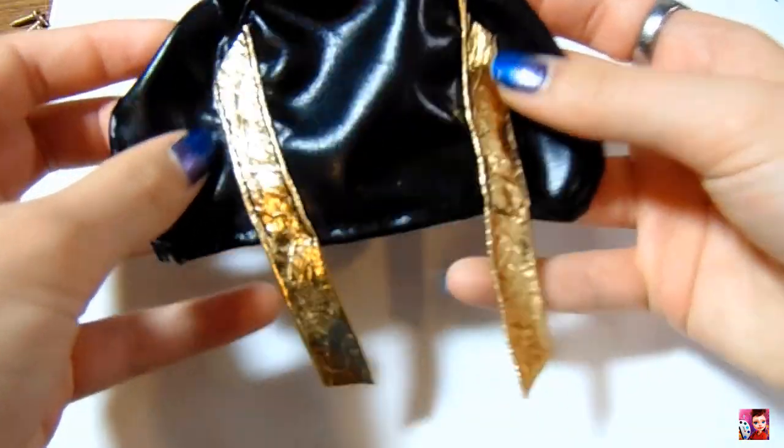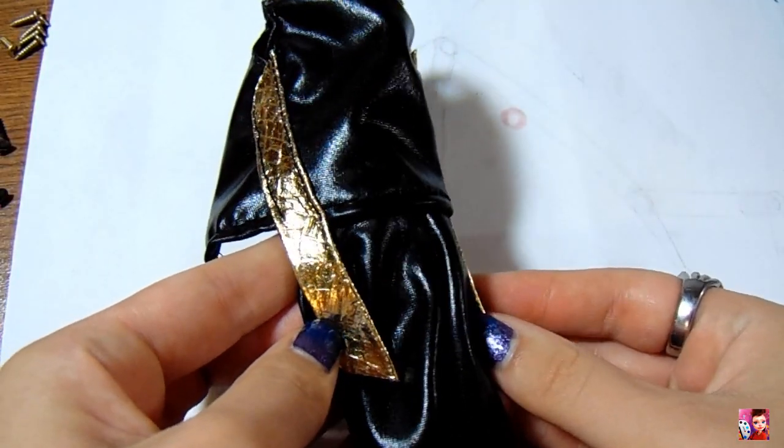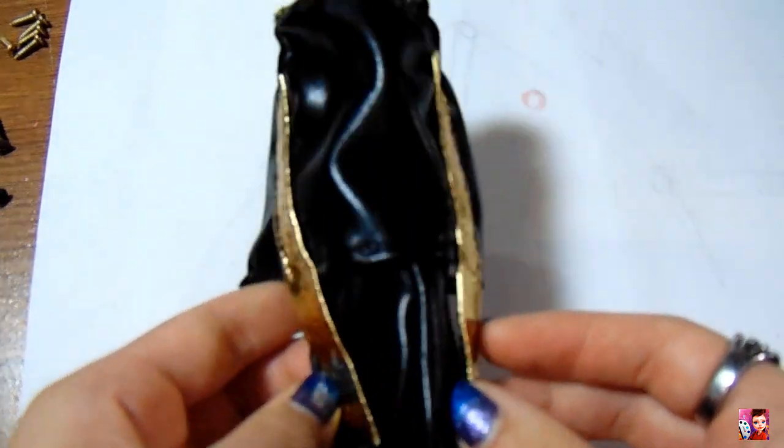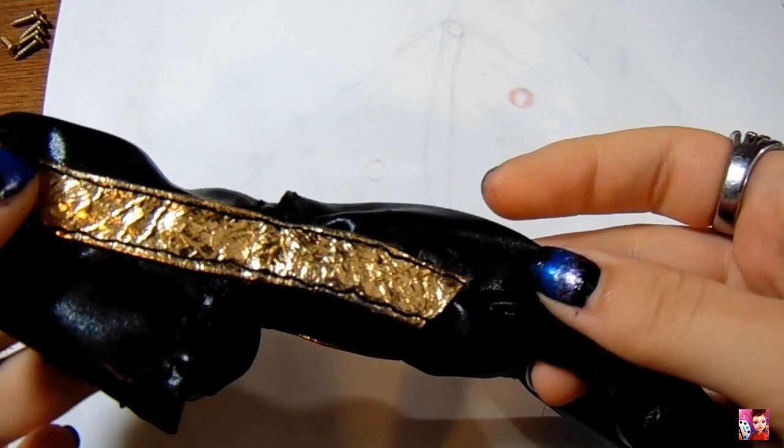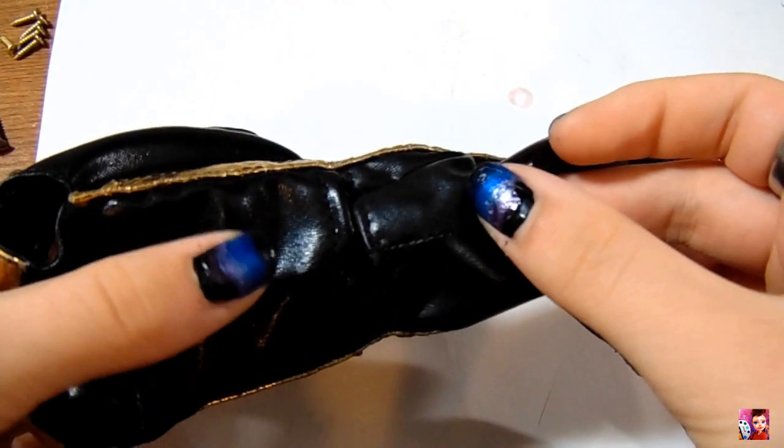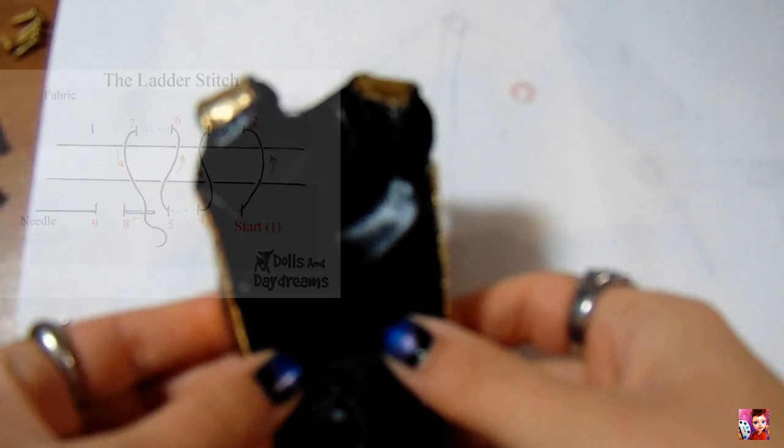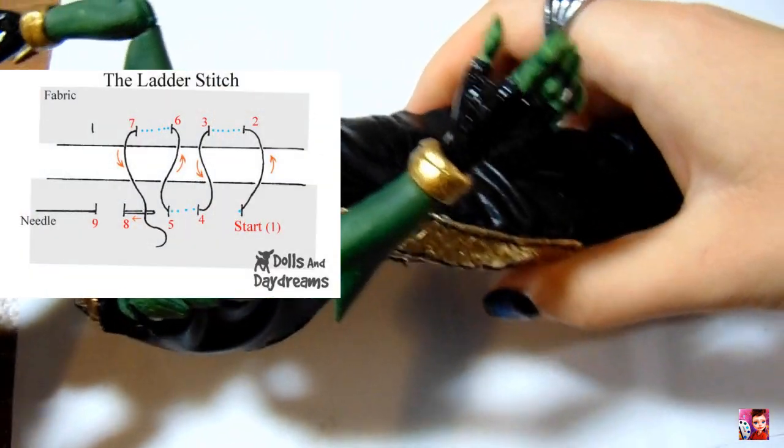So I use the gold fabric to anchor the top and bottoms together to make it into a bodysuit. Before I close the seam between the pants and the top, I tried the outfit on him to make sure that it fit well. I noticed that it was a little bit large, so I adjusted it accordingly. And then I closed the seam using a ladder stitch.